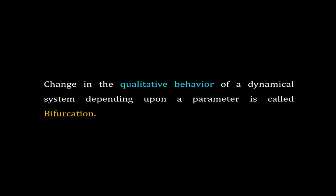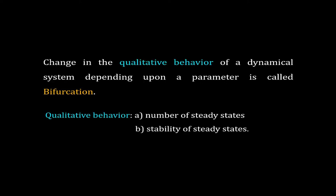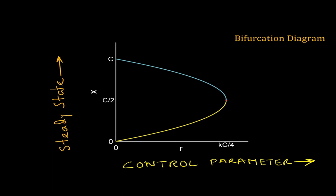In general, for some dynamical systems the qualitative behavior changes with variation of a parameter. By change in qualitative behavior we mean: (a) a change in the number of steady states, and (b) a change in the stability of these steady states. A change in either or both will change the phase portrait of the system. Such qualitative changes in the dynamics depending upon a parameter are called bifurcation, and that particular parameter is called the control parameter. For our fish-in-a-tank model, r is the control parameter. Bifurcation is often visualized on a bifurcation diagram, where the control parameter is on the horizontal axis and the steady states of a dependent variable are shown on the vertical axis.